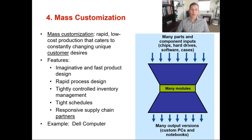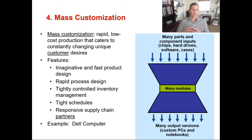Let's talk about mass customization. This is rapid low-cost production that caters to constantly changing unique customer desires. This is without question the hardest for an organization to accomplish because you've got to have high volume plus products that can be built to order. It combines the flexibility of a process focus with the efficiency of a product focus. Some of the features of mass customization are fast product design, rapid process design, tightly controlled inventory management processes, and extremely tight schedules — a lot of just-in-time, lean inventory, lean layouts. Very responsive to supply chain partners because you're implementing just-in-time philosophies to make sure you don't have a lot of inventory since things are constantly changing.